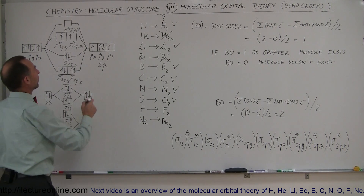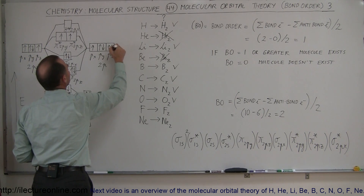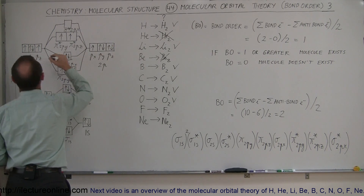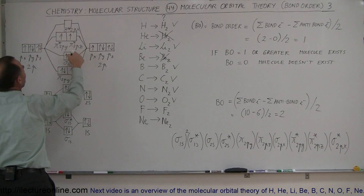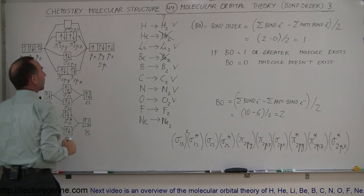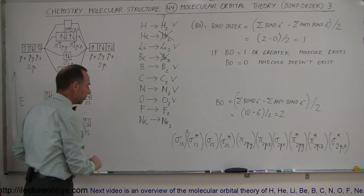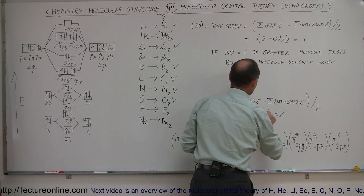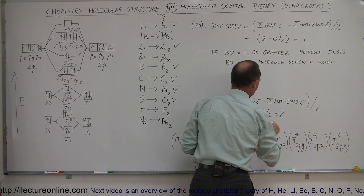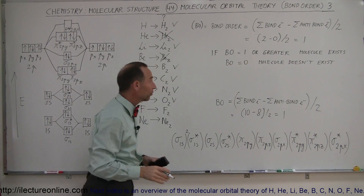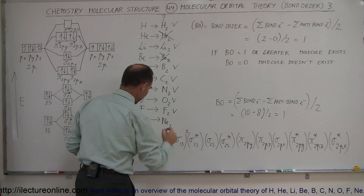Going on to fluorine: with an additional electron in the p orbitals, those electrons end up in the anti-pi bonds. Now we have eight electrons involved in anti-bond pairing. Ten minus eight still means a bond order greater than zero — it's one. So fluorine as a diatomic molecule definitely exists as well.